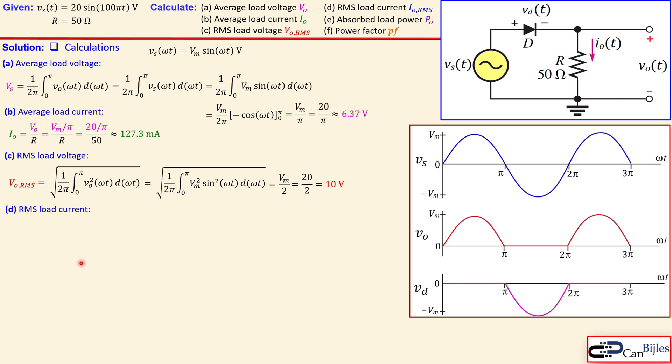RMS load current is now also pretty straightforward, calculated using Ohm's law in this circuit. The load current RMS is equal to load voltage RMS divided by the resistor, and you get here 200 milliamps.